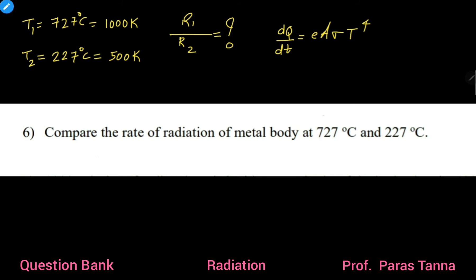let's say this DQ by DT is denoted by capital R. Using this same formula for two different temperatures, we get R1 equals E A sigma T1 raised to 4 and R2 equals E A sigma T2 raised to 4. So, the required ratio R1 equals E A sigma T1 raised to 4, the whole upon E A sigma T2 raised to 4.